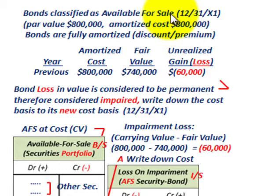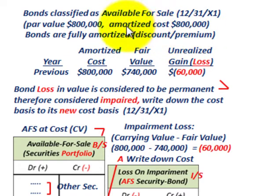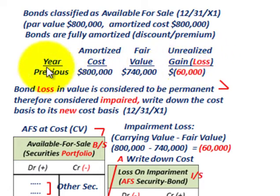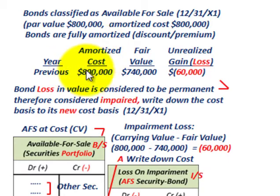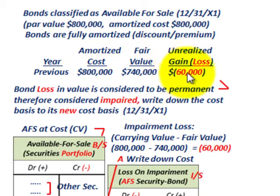These bonds are classified as available for sale. At 12-31-X1, they have a par value of $800,000 and an amortized cost of $800,000 — so the bonds are fully amortized with no discount or premium complications. When dealing with available-for-sale securities, you must recognize unrealized gains or losses for the period, comparing the amortized cost of $800,000 to the fair value of $740,000. The difference is $60,000.